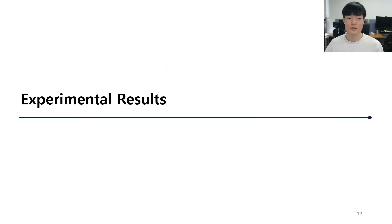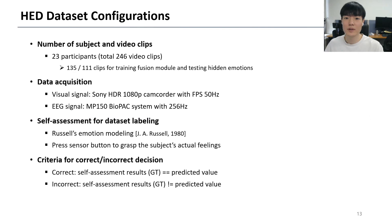Regarding the details of experimental results: we filmed 23 participants and collected various mismatch cases. We labeled the HED dataset using a self-assessment rule based on Russell's emotional model. Also, a press sensor button was used for checking the subject's actual feelings.